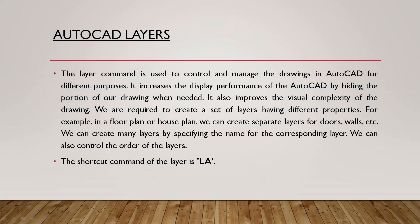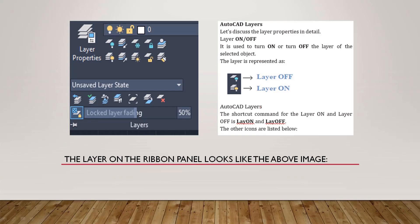The next topic is the layer command. You can control your drawing using layers. Layers increase the display performance of AutoCAD by hiding portions of your drawing when needed. For example, if you have a beam in one layer, you can see the column and hide the beam. We can create a set of layers with different properties — for example, in a floor plan, we can create separate layers for a door or a wall. The layer ribbon panel displays the available layers.